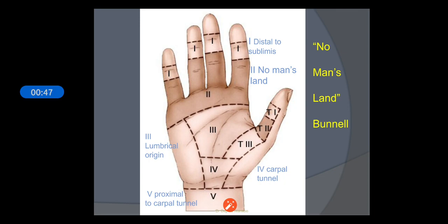Before going into the injury, let us see what are the flexor tendon zones which are present on the palmar aspect of our hand. We have mainly five zones. Zone 1 is distal to the superficialis tendon. Zone 2 is distal to the palmar crease of PIP. Zone 3 lies over the palm. Zone 4 is within the carpal tunnel. Zone 5 is at the forearm, proximal to the carpal tunnel.